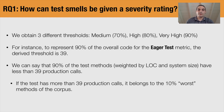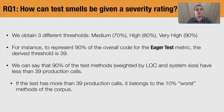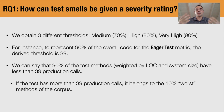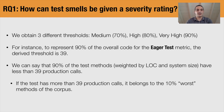Just to give an example: to represent 90% of the overall code for the eager test metric, the derived threshold is 39. What does 39 mean? It means that 90% of the hundreds of thousands of test methods that we analyzed, weighted by lines of code and system size, have less than 39 production calls. In other words, if we now analyze a new test method that has more than 39 production calls, we can say that it belongs to the worst 10% of methods we ever analyzed.